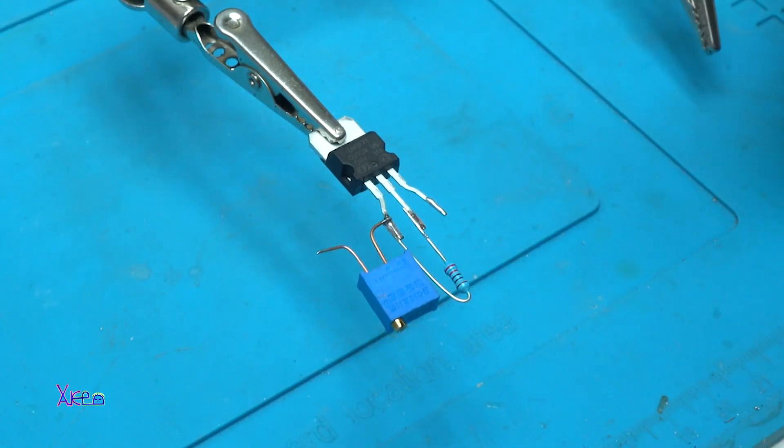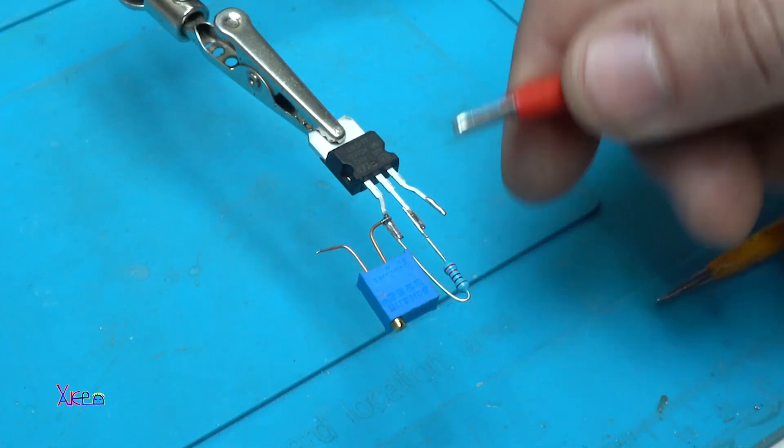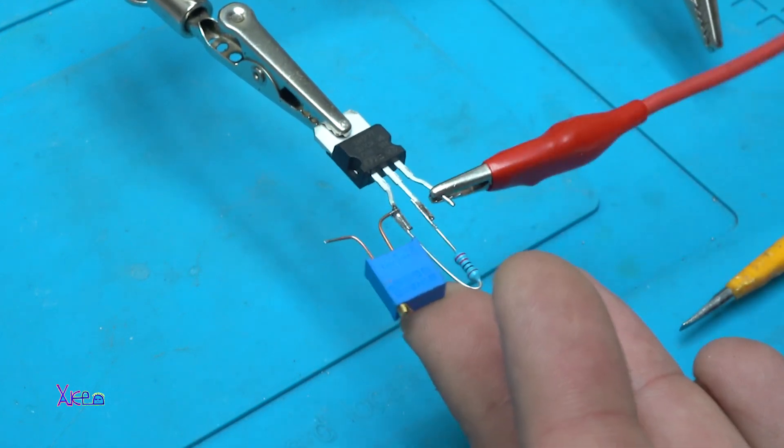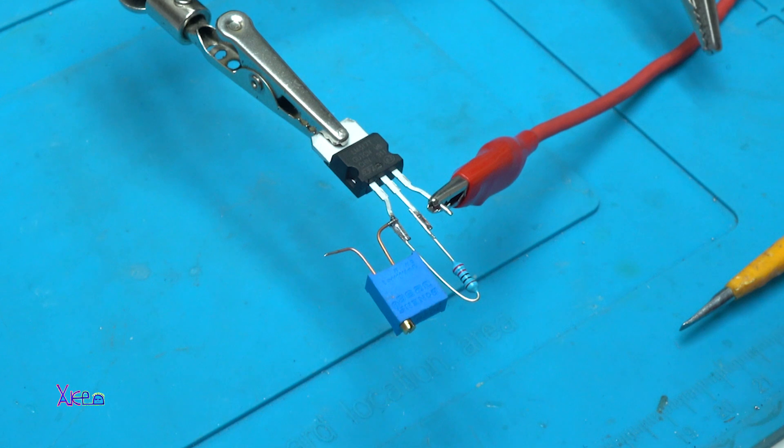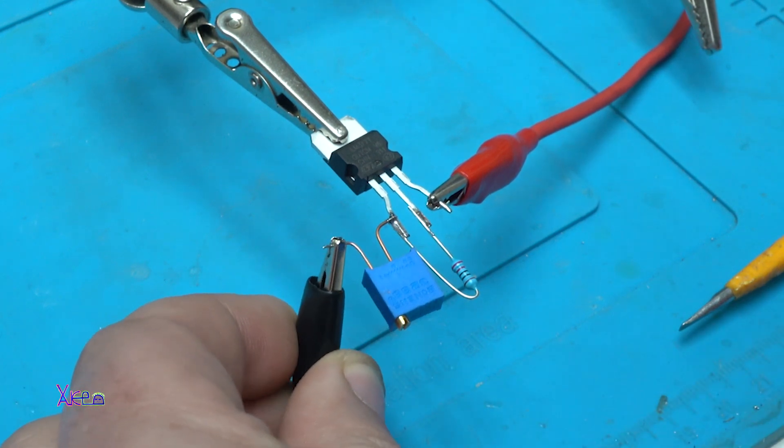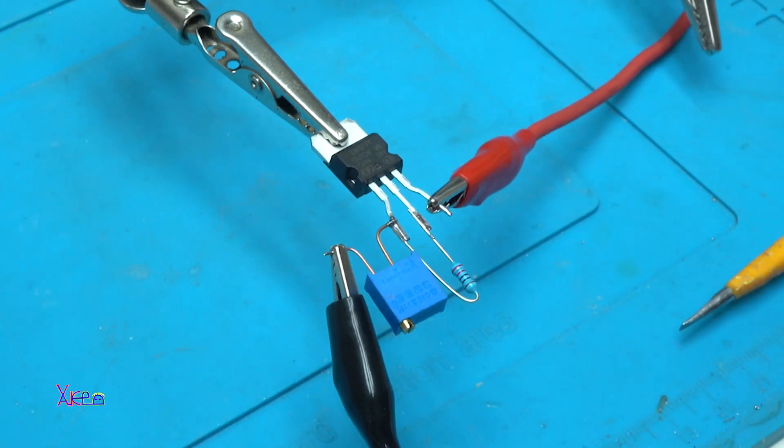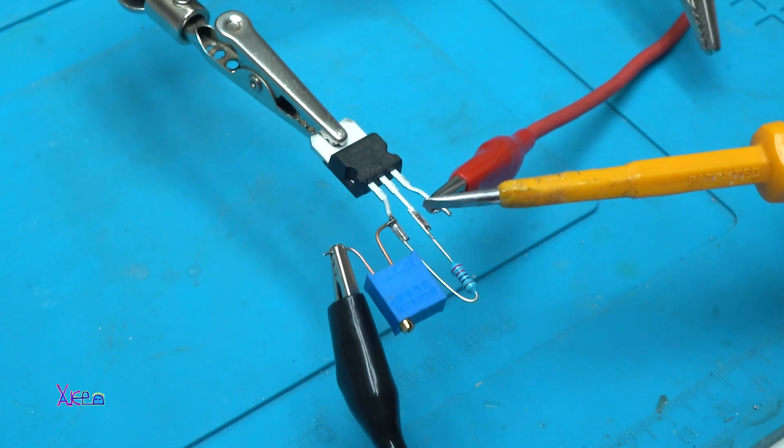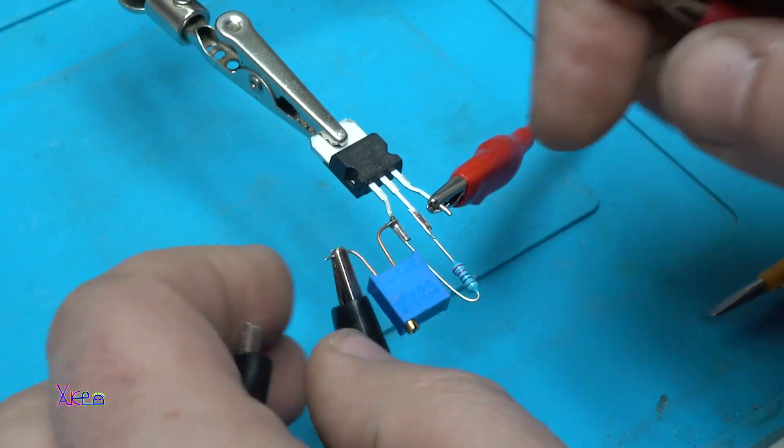Now I'm gonna test it, but before that, on pin number 3 we're gonna add voltage input. I'm gonna use 15 volts. The ground will be the other leg of the potentiometer. The output will be on pin number 2 of the voltage regulator and ground.